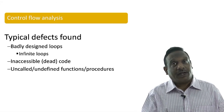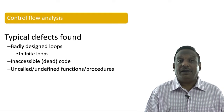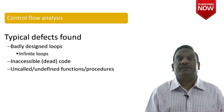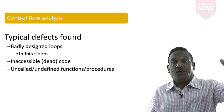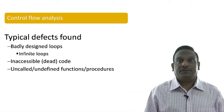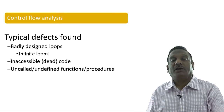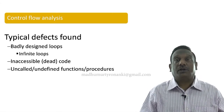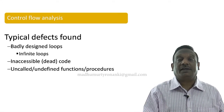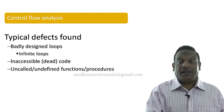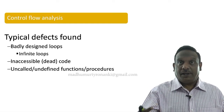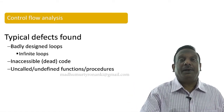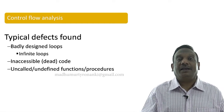The third type of defect found using control flow analysis is uncalled and undefined functions and procedures. When in a control flow of a program you call many subroutines, sometimes you call subroutines that are not in your program. Those can also create serious failures. All these types of problems can be found by doing a thorough control flow analysis, either manually or automatically by intelligent programs called static analyzers.